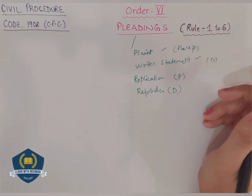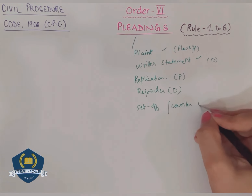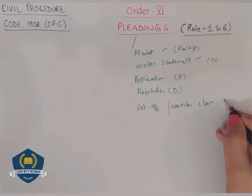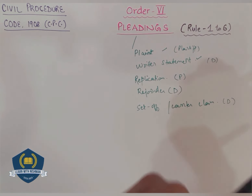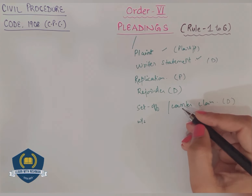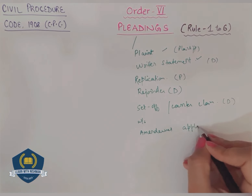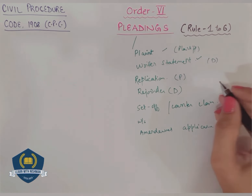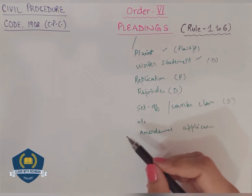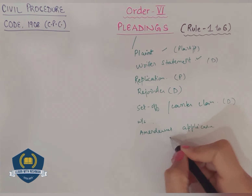The defendant may also file a set-off or counter claim application. That will also be called a pleading. In reply to that set-off or counter claim by the defendant, the plaintiff files his written statement again - that will also be a pleading. An application for amendment of pleading is also a pleading. So all these are pleadings: plaint, written statement, replication, rejoinder, additional written statement, counter claim or set-off, and an application for amendment. All are pleadings.